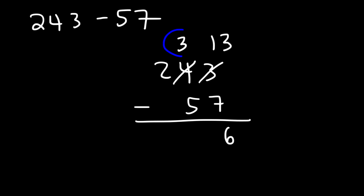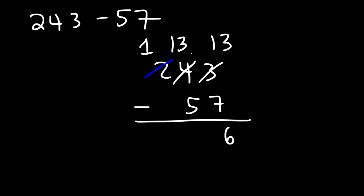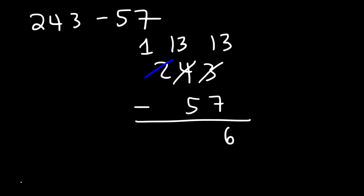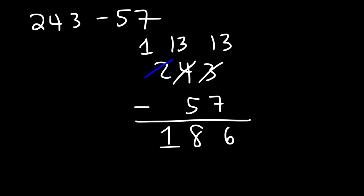And then 3 minus 5 is negative 2, so we're not going to do that. Let's borrow a 1 from 2. So that becomes a 1, and the 3 becomes 13. So we have 13 minus 5, which is 8. And then 1 minus nothing is 1. So the final answer for this example is 186.